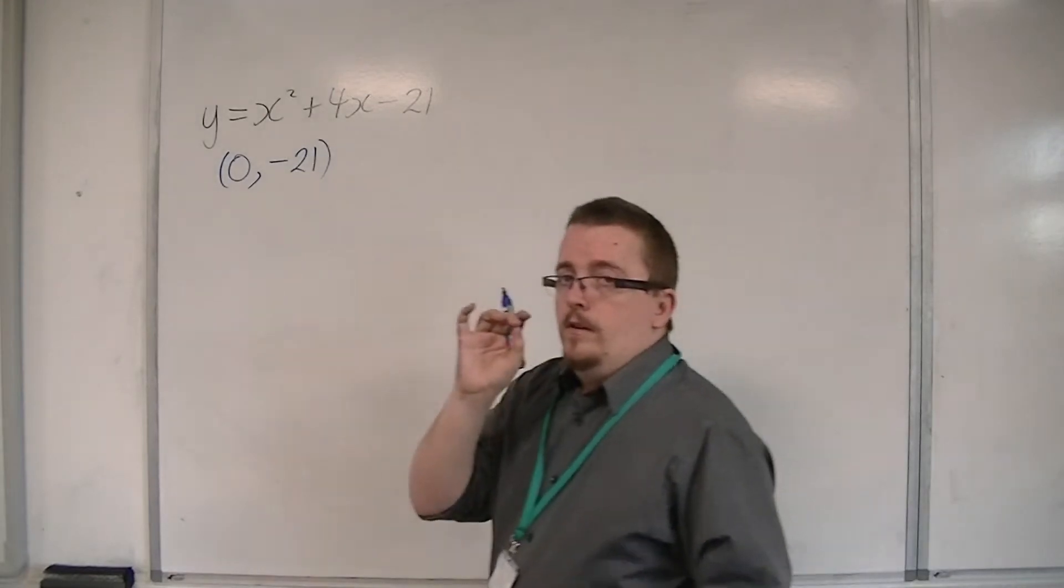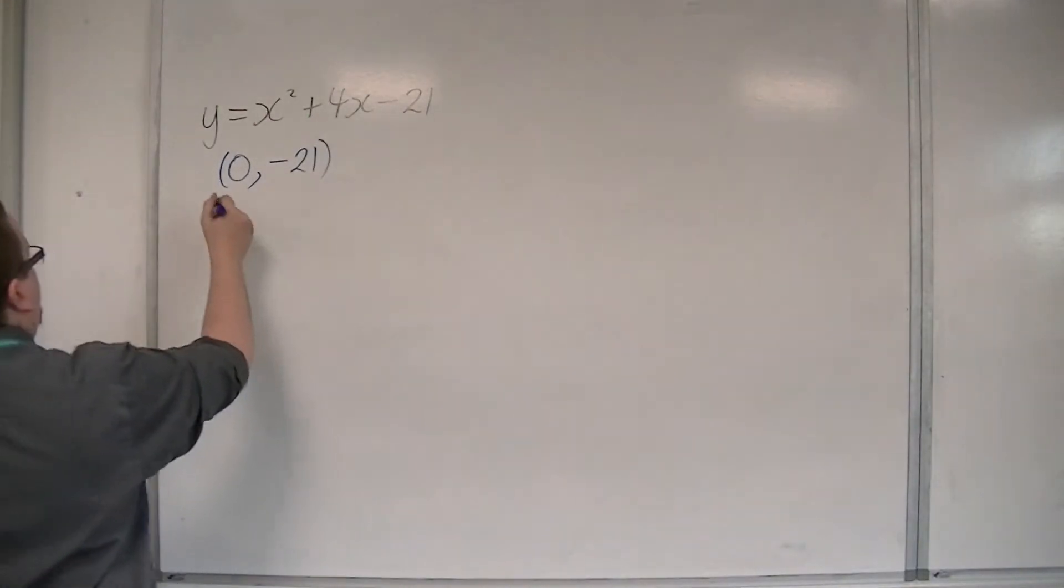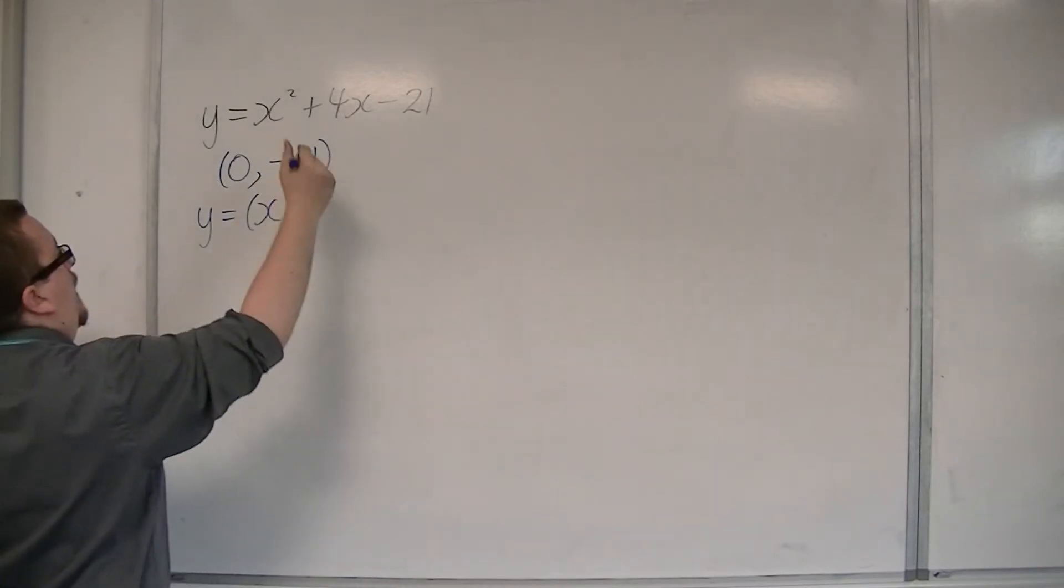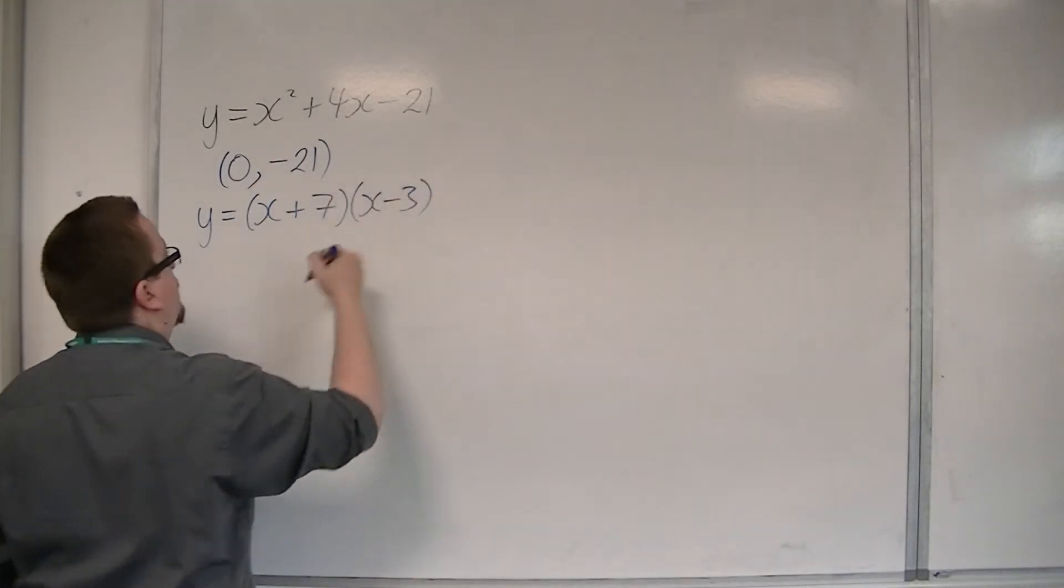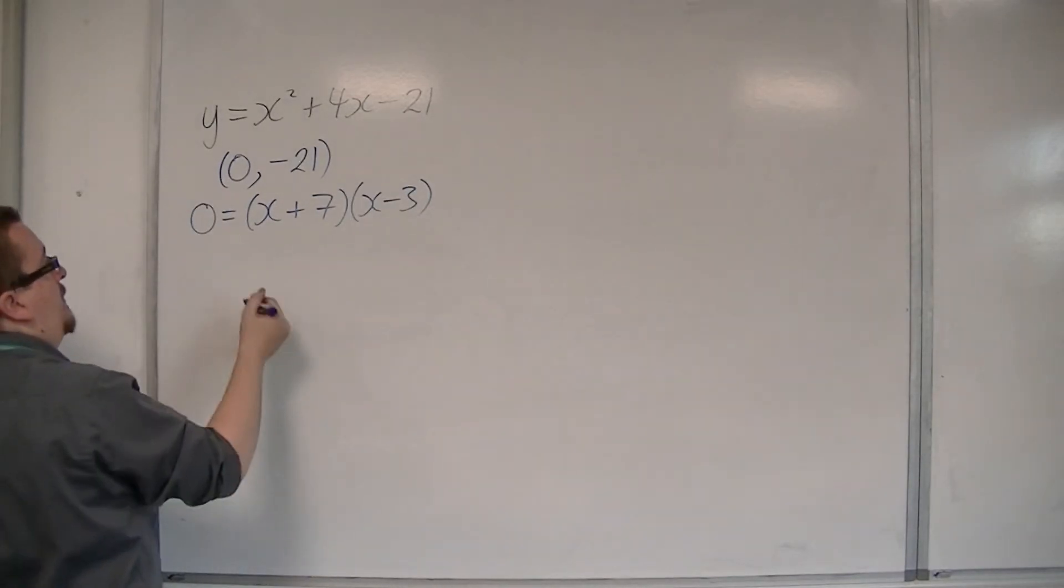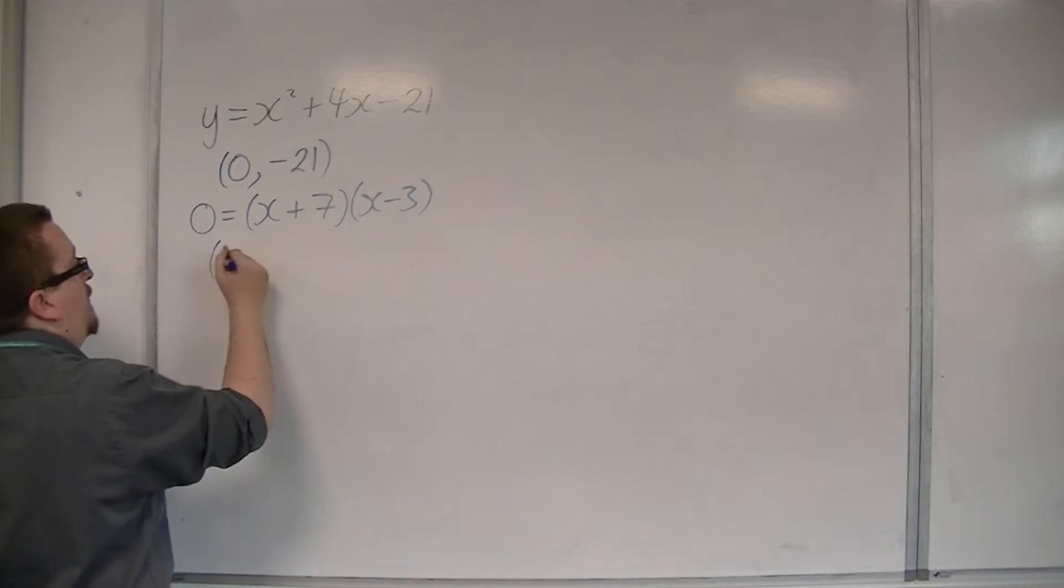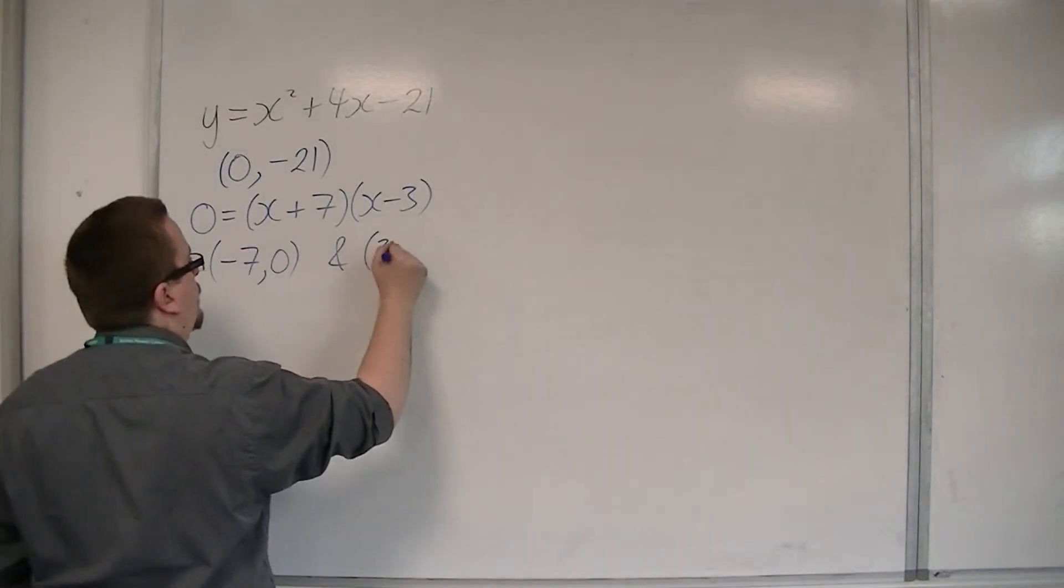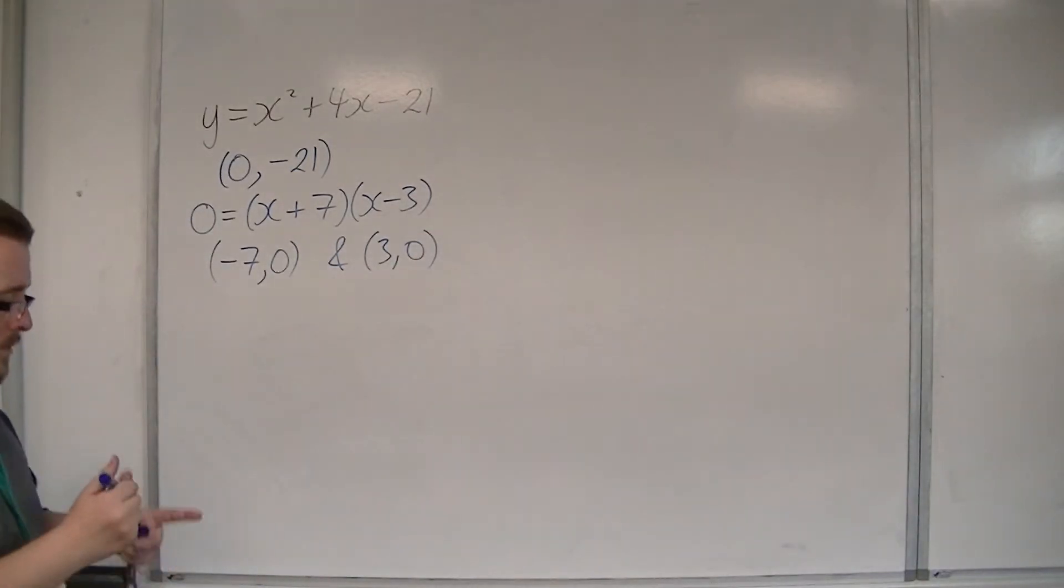We then factorised it. So y equals x plus 7 times x minus 3. And when y is 0, that means that either x is minus 7 or x is 3. And that gained us two points where it crossed the x-axis.